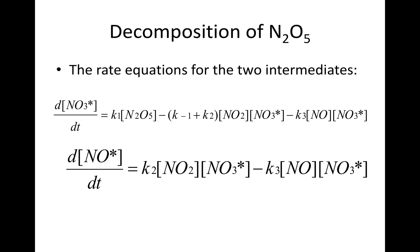Similarly for nitric oxide, d[NO*]/dt = k₂[NO₂][NO₃*] - k₃[NO][NO₃*].